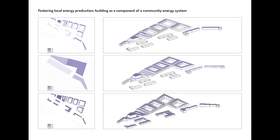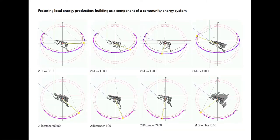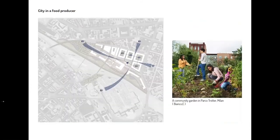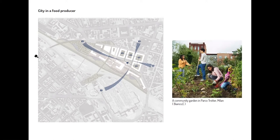Fostering local energy production — building as a component of a community energy system. To benefit from the sun as much as possible, I searched for the best height and shape of the buildings and among the alternatives I chose the third option, running sun exposure analysis to cross-check. City as a food producer: where I propose residential blocks, I also propose community gardens which will be managed by inhabitants in the courtyards, and an open marketplace to let them sell their products to other residents of the city.